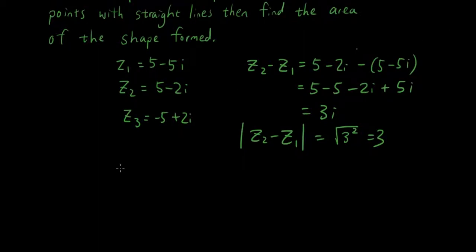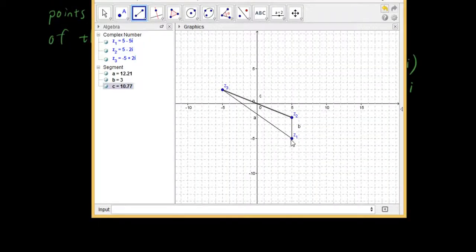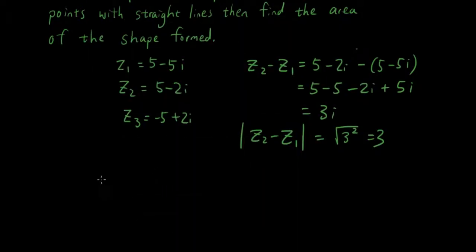So that's the magnitude of this line here. And now we want the height, perpendicular height of this triangle, which is basically the real component of z2-z3. Actually, z3-z2, so let's go z3-z2.